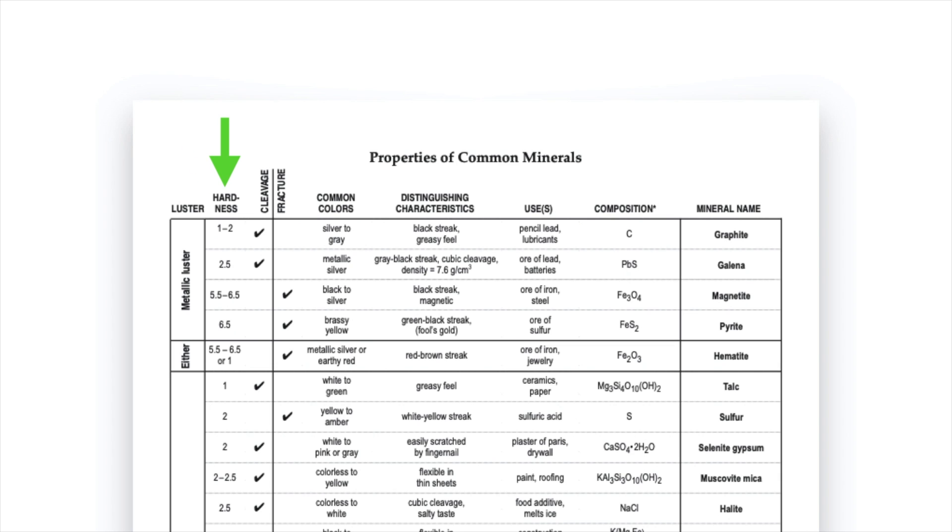Working our way across we next have hardness. Hardness is a number from one to ten that's based on something called the Mohs scale of hardness. One would be very soft minerals like talc and ten would be very hard like diamond. So you can see there's either a number or a range of numbers for each of the minerals.